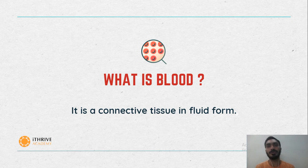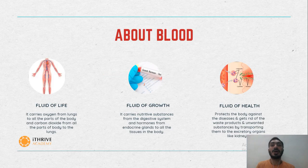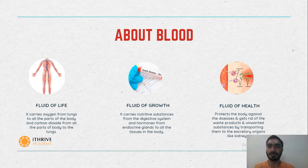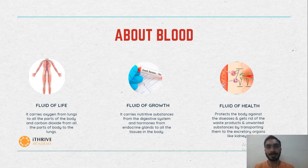As it circulates all around the body, it allows constant communication between tissues distinct from each other. Blood is also known as the fluid of life, as it transports oxygen from the lungs to various tissues of our body. It is also known as the fluid of growth, as it carries all the nutritive substances derived from the digestive system to various cells of our body for the production of energy and also for growth. It is also known as the fluid of health, as our blood contains immune cells which protect our body from all invading pathogens.